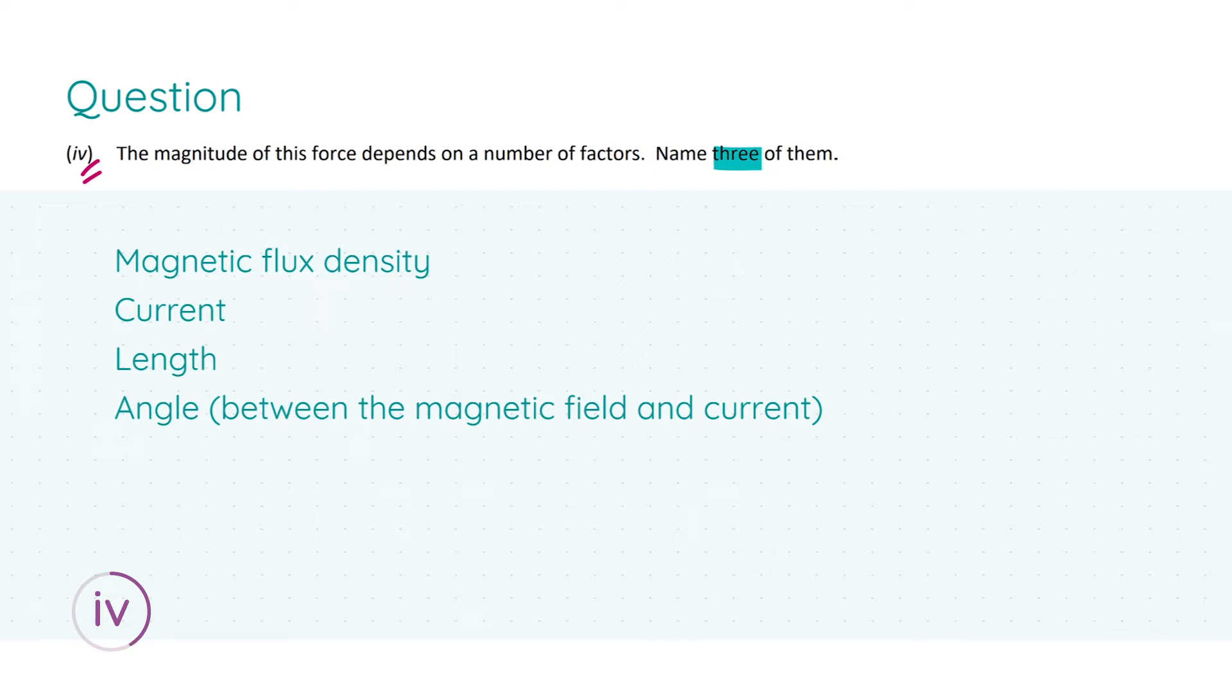It doesn't say so in the marking scheme. So we have magnetic flux density, current, length, and the angle which is between the magnetic field and the current. For every factor you name, you get two marks.